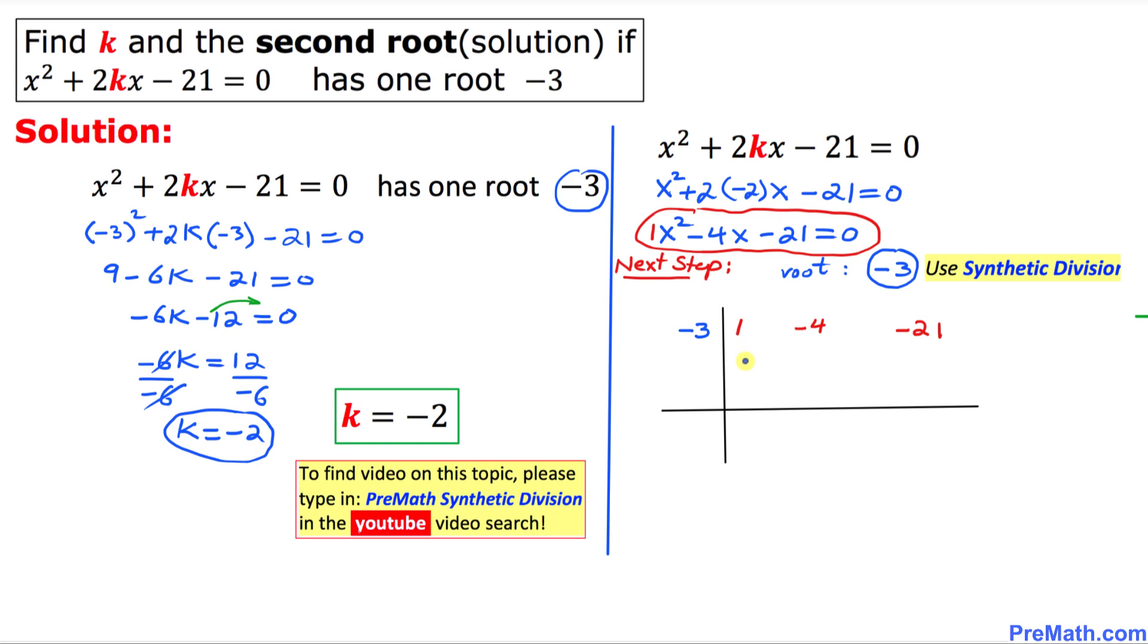Let's get started with the synthetic division. First of all this number 1, I am going to bring this one down all the way over here. Then we're going to diagonally multiply. Negative 3 times 1 is going to be negative 3. Put this number down and you add these two numbers up. That's going to give us negative 7. Once again multiply, negative 3 times negative 7, so that's going to give us positive 21. Add these numbers up, so that is going to give us 0 as remainder.